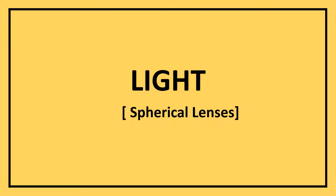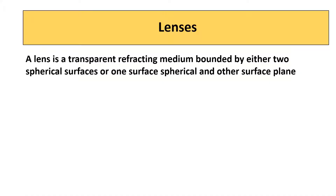Hi students, let us learn about spherical lenses. What is a lens? A lens is a transparent refracting medium. Transparent means it allows the light rays to pass through it. We know the property of refraction of light.